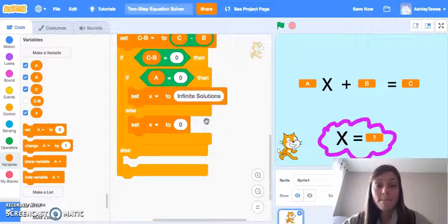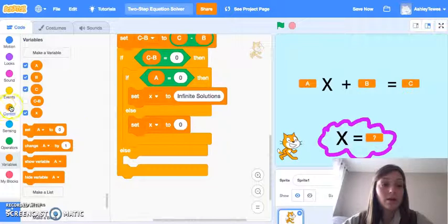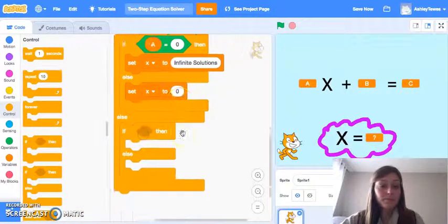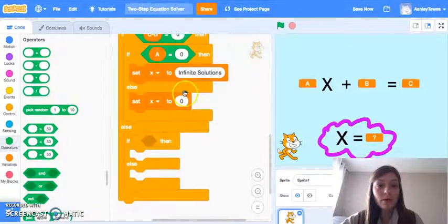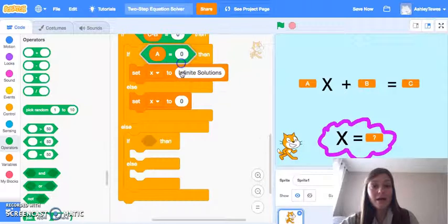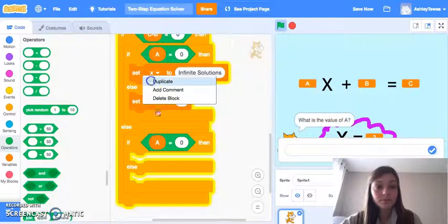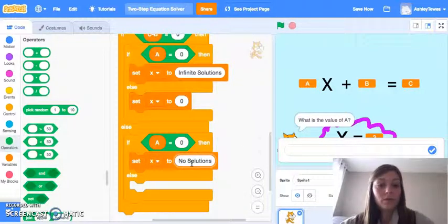Continuing down with our flowchart here. If C minus B equals zero, now we're coming to the else part of this block, which means C minus B does not equal zero. We need another if-then-else block. Now we're going to say the same thing here. We're going to say, well, if C minus B does not equal zero, but A equals zero, we're going to say X has no solutions.